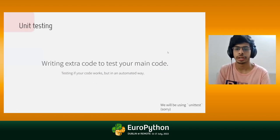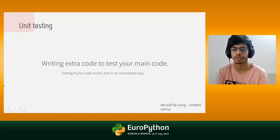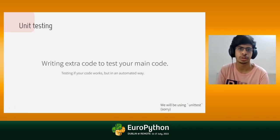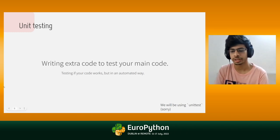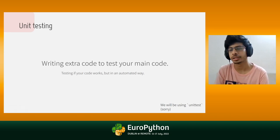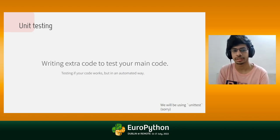So what is unit testing? A very basic term. Unit testing means writing extra code to test your user-facing code, or the main code that your user would be using. This process should ideally be automated — you should not run unit tests every time you make a change, but it should run automatically using a pipeline. We will be using the unittest library of Python for this talk. A lot of Python libraries are shifting to pytest, but for this talk let's stick to unittest.